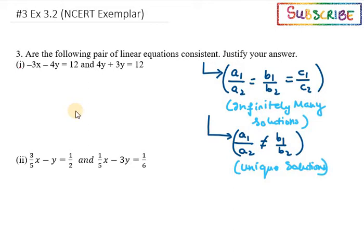Hello everyone, let's start with exercise 3.2, question number 3. It asks: are the following pairs of linear equations consistent? Justify your answer. For a system to be consistent, it should have two possibilities - one is infinitely many solutions, the other is unique solution. These are the two conditions it must satisfy to form a consistent equation.